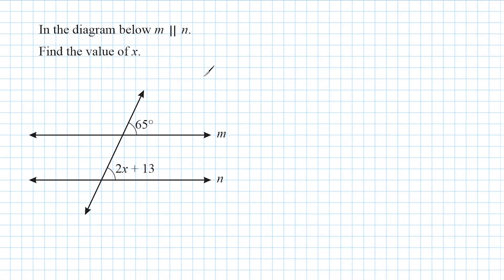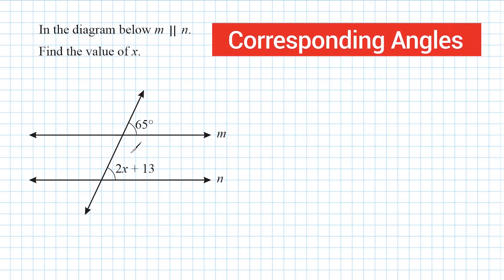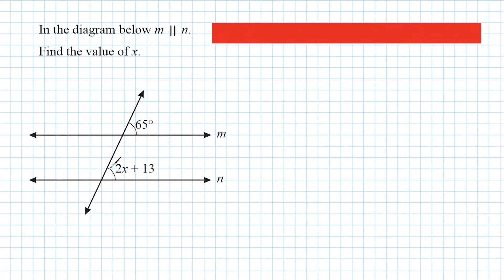This first problem shows a diagram where we have line segments m and n, which are parallel to each other, being cut by a transversal. Up here we have a 65 degree angle, and down here we have an equation that represents this angle measure. What we have to recognize first is that this angle and this angle are corresponding angles, and corresponding angles are equal to each other.